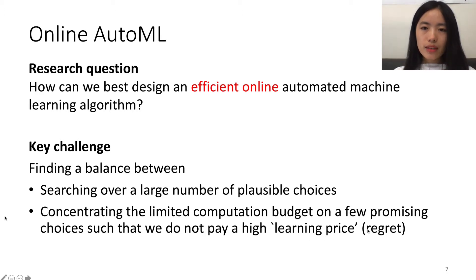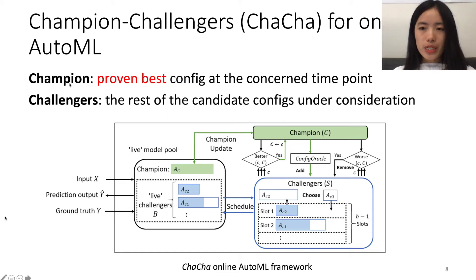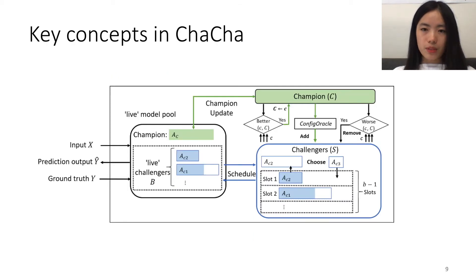To this end, we propose the Champion-Challenger Online AutoML framework, or ChaCha. In this framework, we characterize all the configurations into two categories, including one Champion — the configuration proven best at any time point — and the rest of the candidate configurations under consideration, which are all called Challengers. Before zooming into the details, let me first introduce several important concepts in this framework.